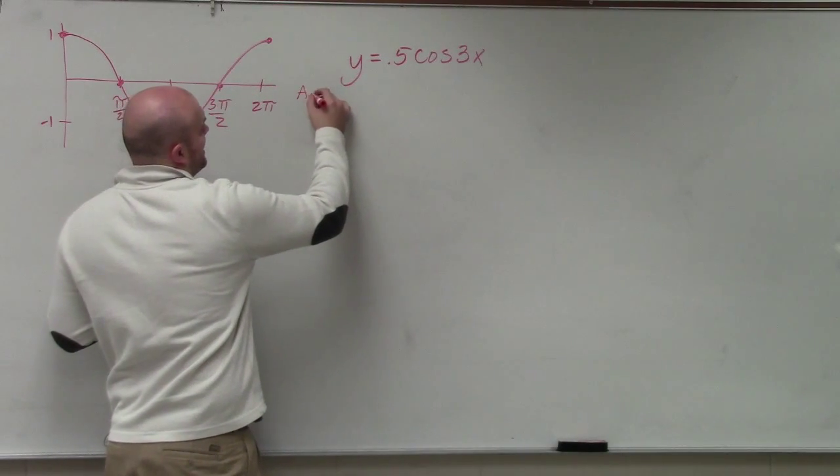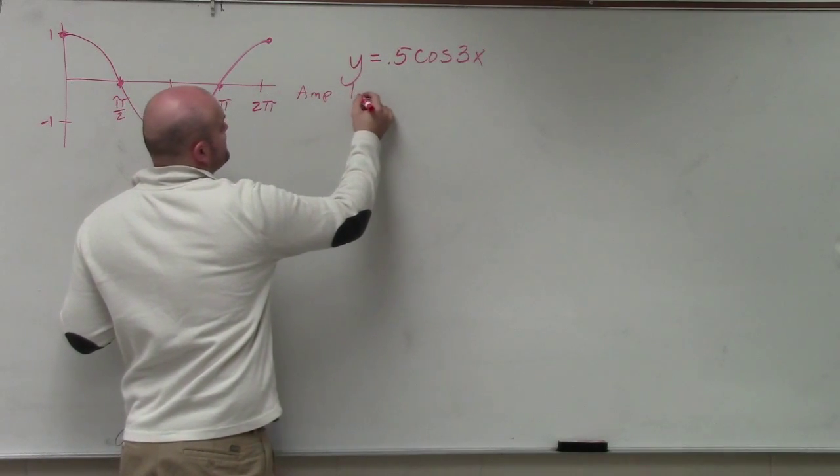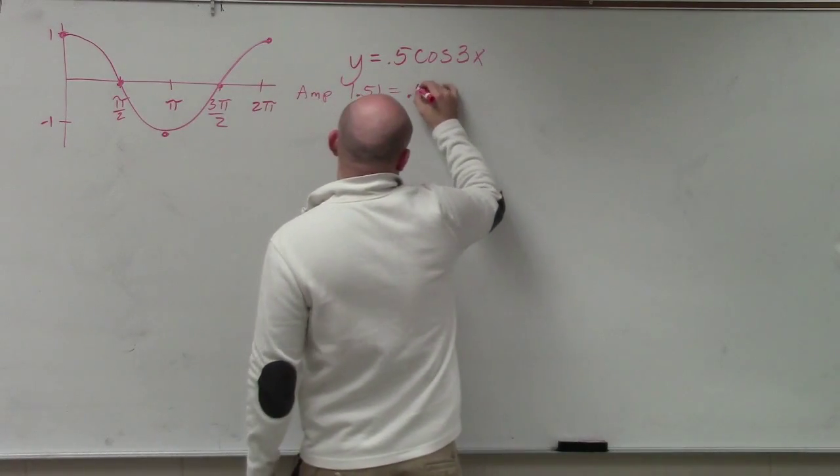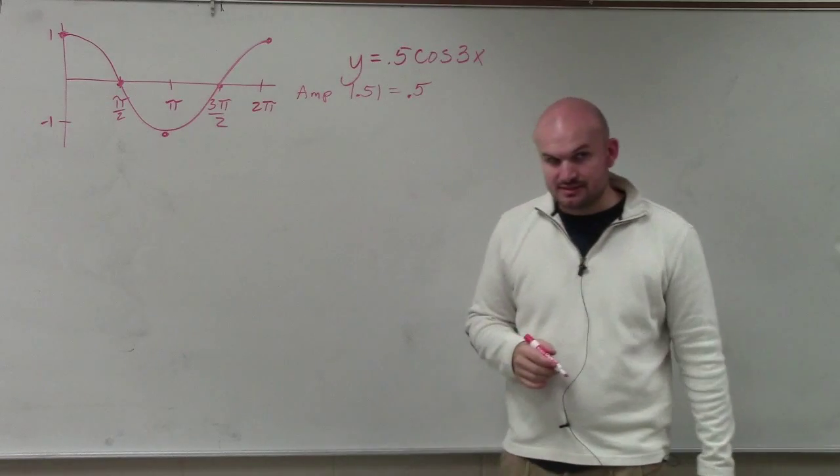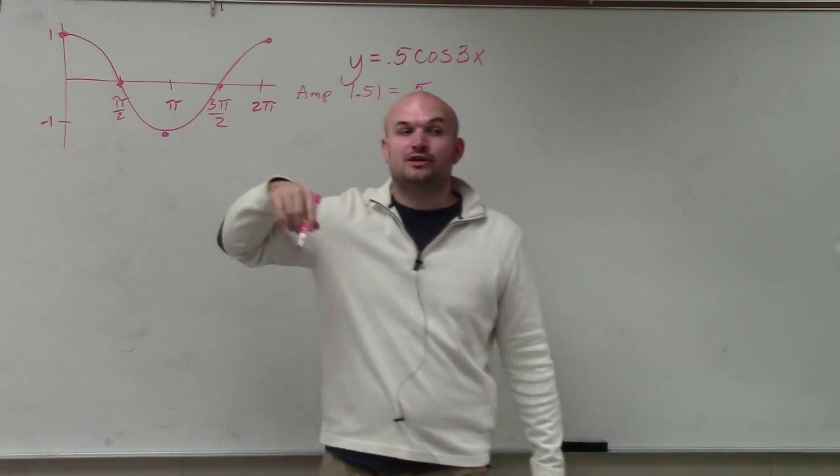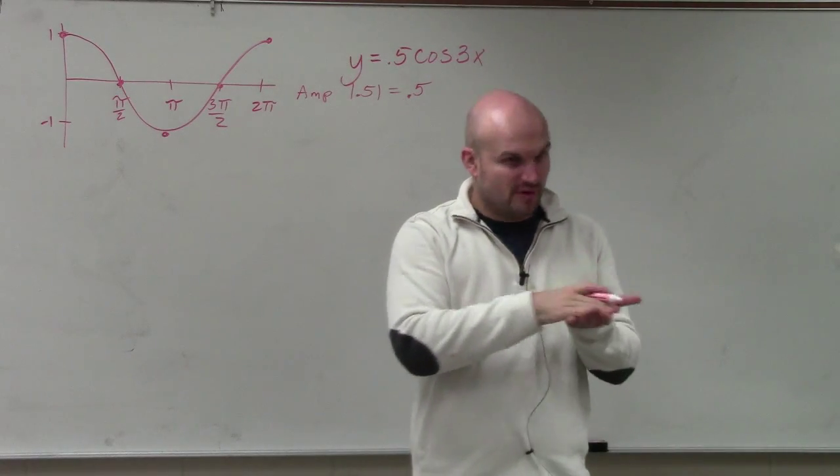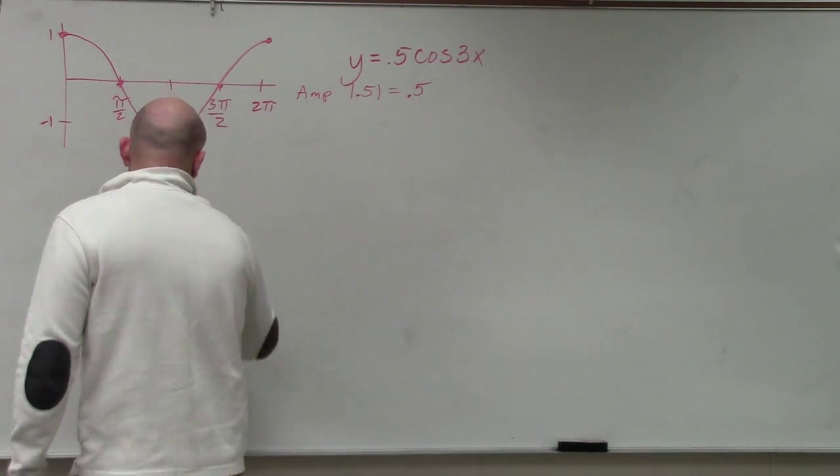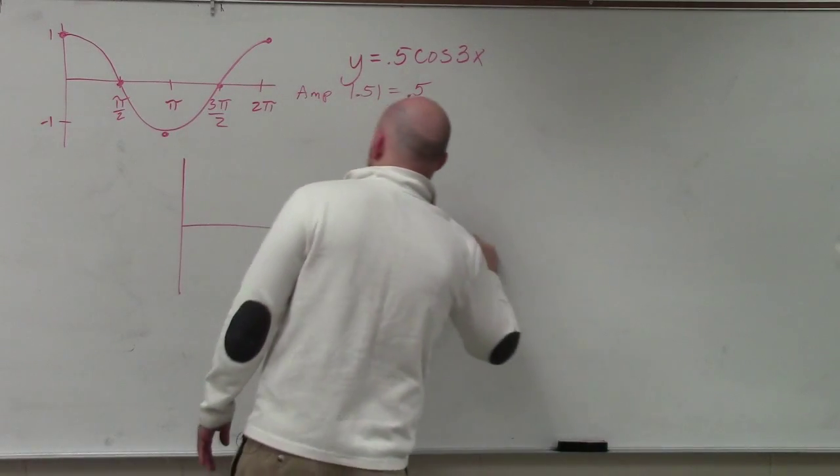The first thing is the amplitude, which is the absolute value of 0.5, so just 0.5. Instead of the graph going up to 1, now the graph is going to go up to 0.5, or one-half.